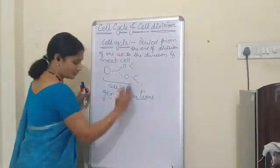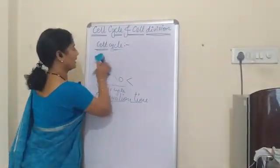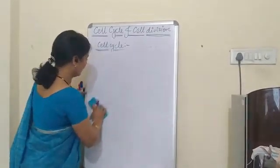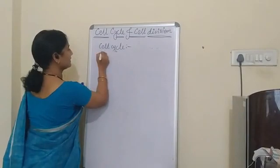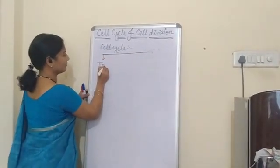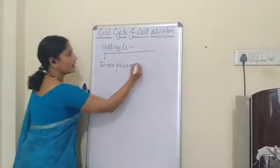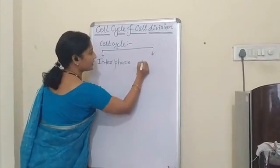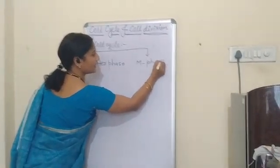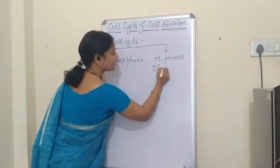Now let us start with the phases of the cell cycle. We can divide the phases of the cell cycle into two: one is called interphase, and the second is M phase, also called the multiplication phase or division phase.